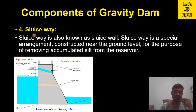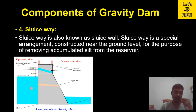The fourth component is the sluiceway, also known as the sluice wall. A sluiceway is a special arrangement constructed near the ground level for the purpose of removing accumulated silt from the reservoir. Sediments and silt enter the reservoir and settle at the bottom, so a sluiceway is provided to enable their removal.